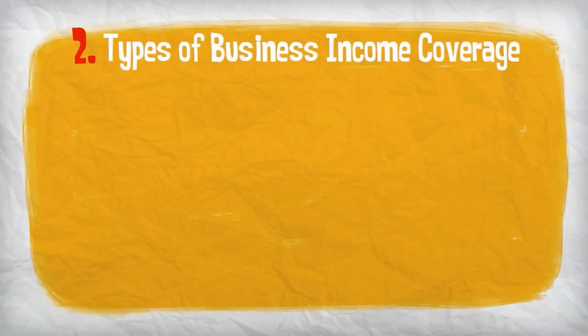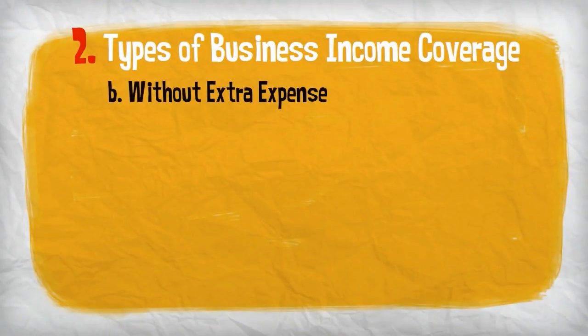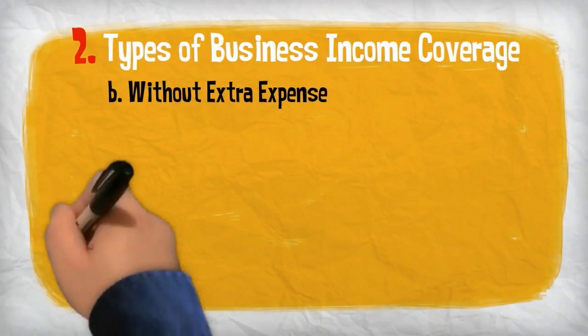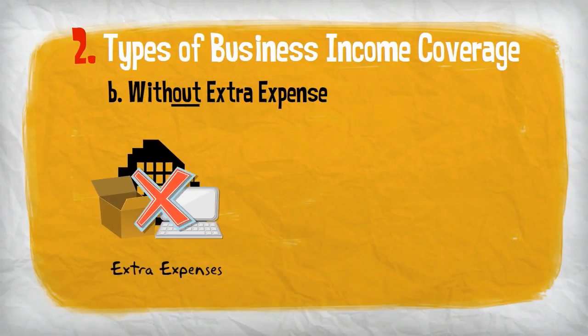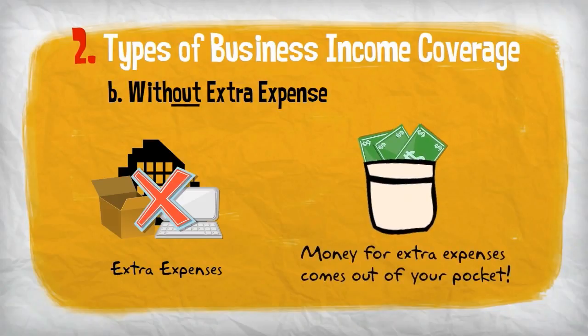The second type of business income coverage, without extra expense, does not include coverage for extra expenses incurred to keep your business operational after the loss, leaving you to cover those expenses.